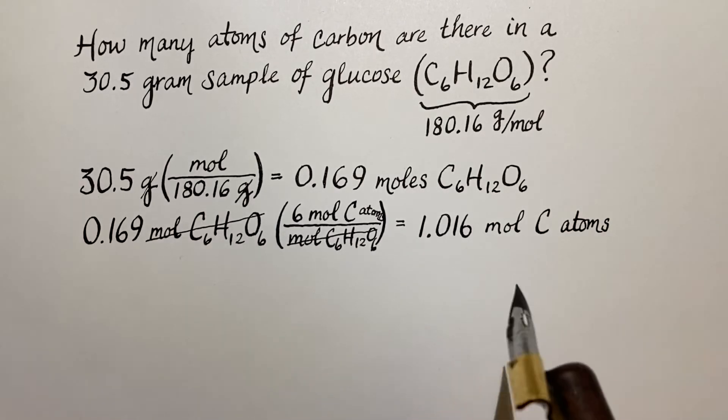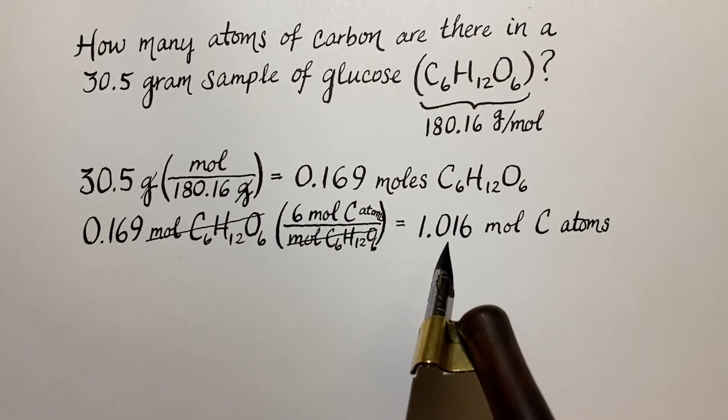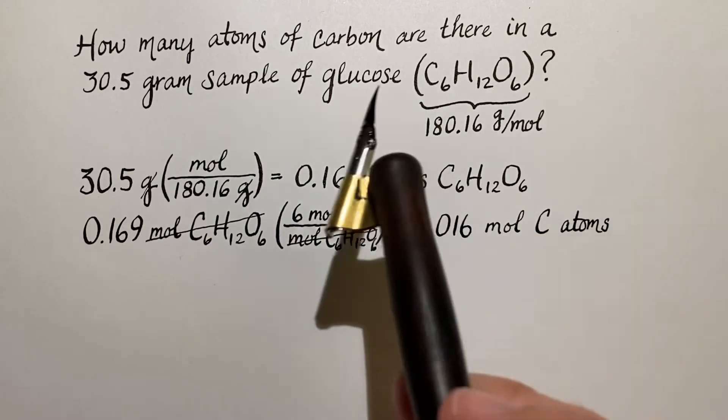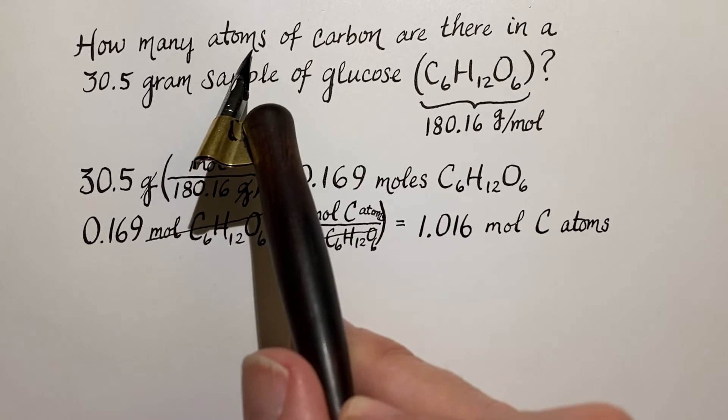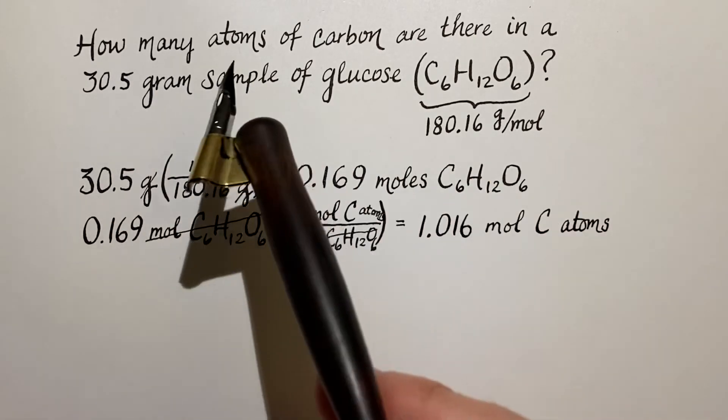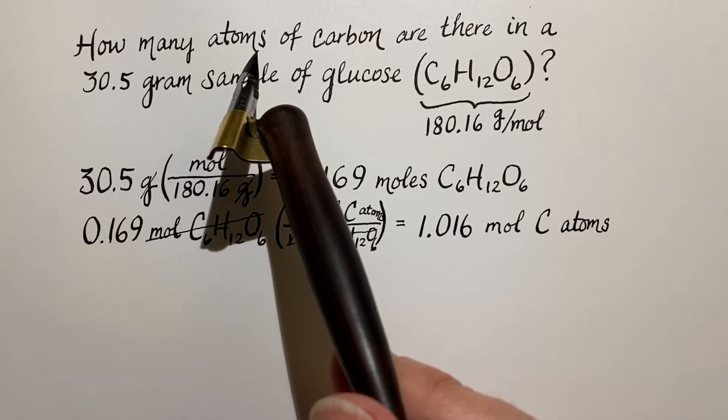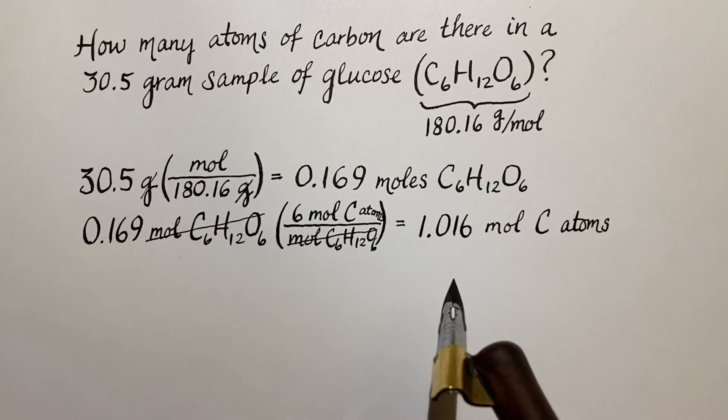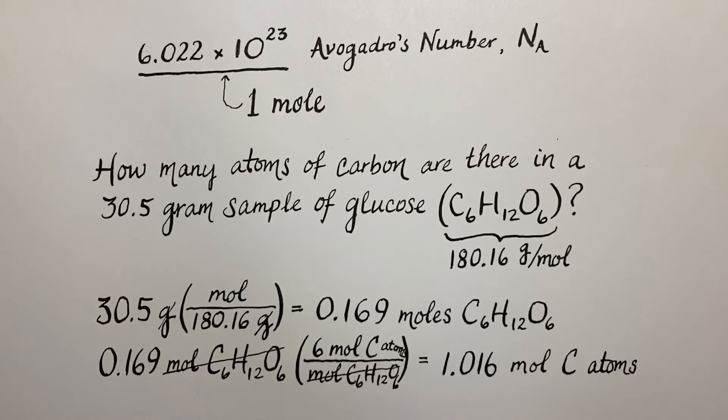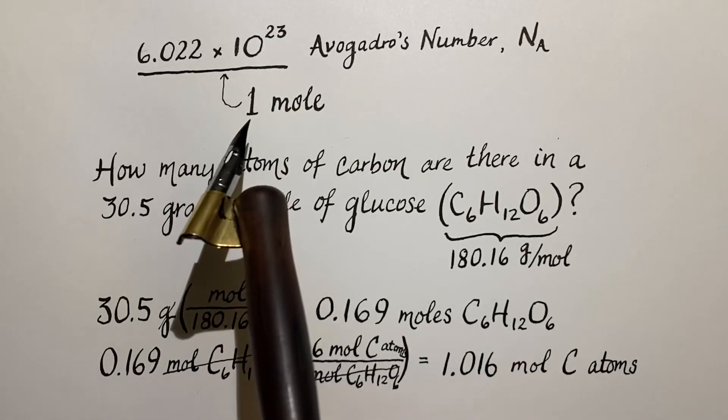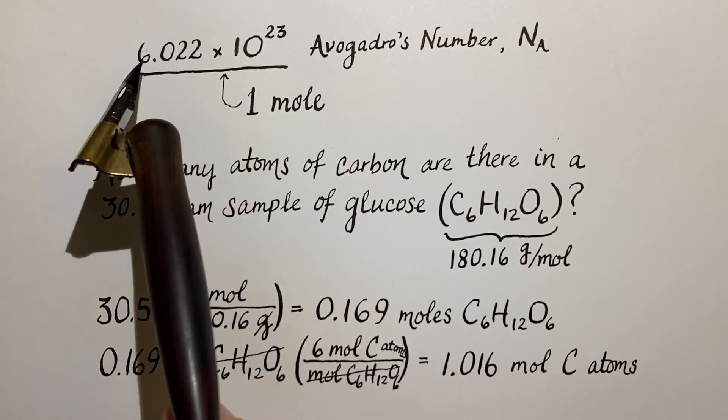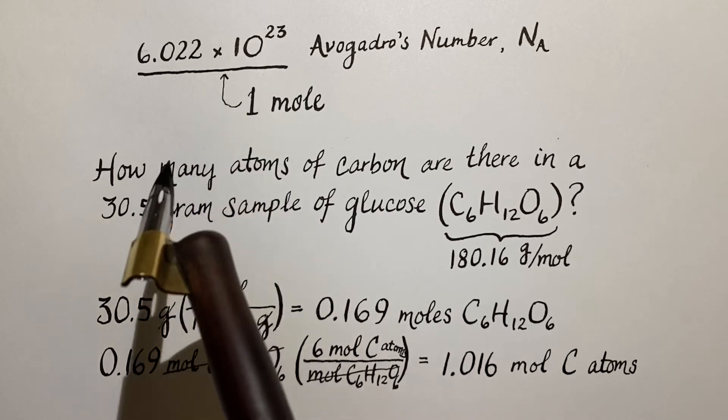All right, we're so much closer. So now we want to determine how many carbon atoms there are. The question isn't asking how many moles of carbon atoms but how many actual atoms there are. So this is where we invoke Avogadro's number.